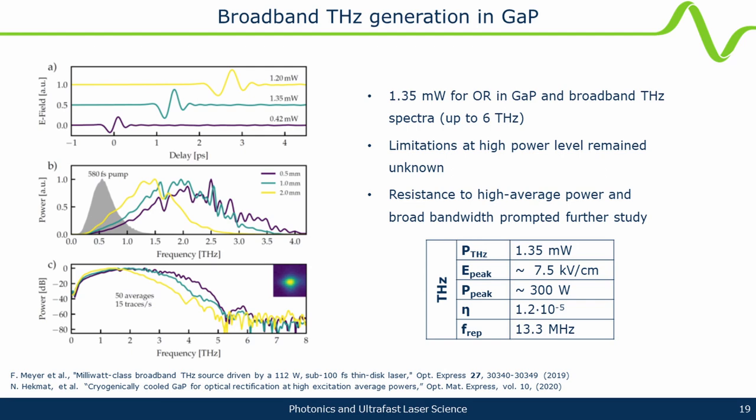We started with GaP because it is phase-matched at room temperature collinearly with 1030 nm, which helps a lot to get started. We knew the limitations — low nonlinear coefficients, conversion probably not record high — but we would learn about the different trade-offs and thermal effects. Surprisingly, the material holds the full power: we were quite surprised that it can hold the whole 100-watt beam at intensities typical for optical rectification.